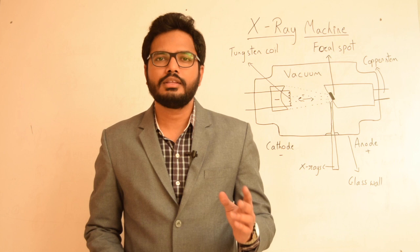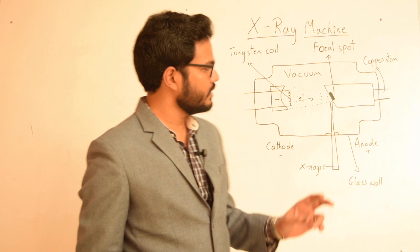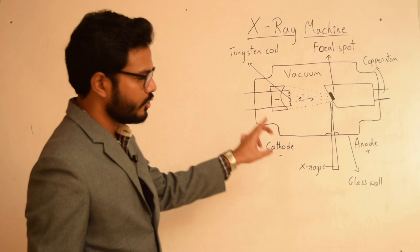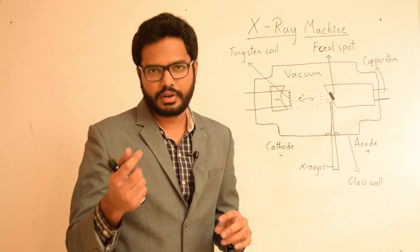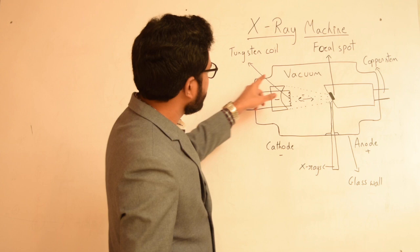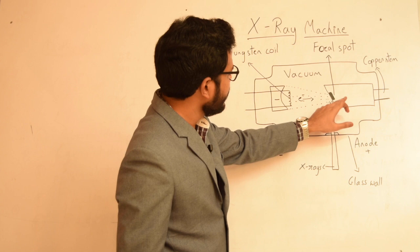In this video, let's discuss the various components and working mechanism of an x-ray machine. This is a schematic representation of an x-ray machine, specifically called an x-ray tube. This entire setup is present within a tube head which is attached to a wall by means of an arm. The x-ray tube has a glass wall enclosure, and within this glass wall you can find a cathode, an anode, and it's entirely vacuum inside — no air or any gas present.